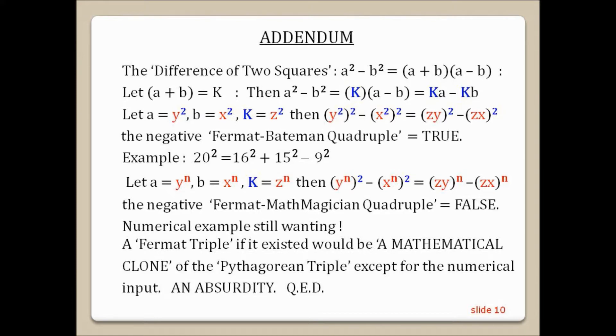Let a equal y to the n, b equal x to the n, k equals z to the n. Then y to the n squared minus x to the n squared equals zy to the power n minus zx to the power n. The negative Fermat-Mathemagician quadruple equals false.